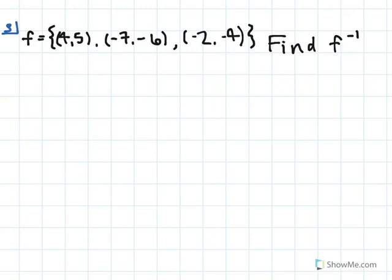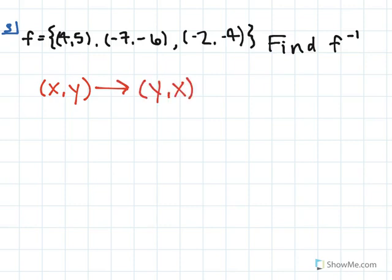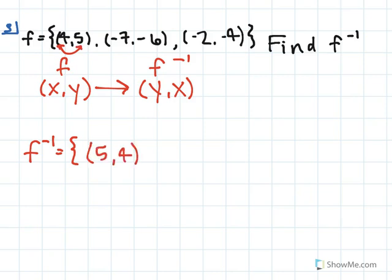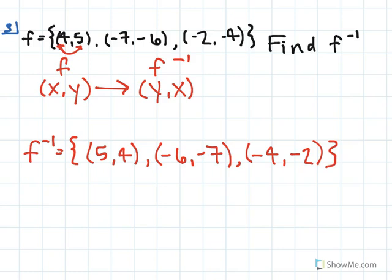In this question we're given a set of ordered pairs and we're asked to find the inverse. When working with a set of ordered pairs and you need to find the inverse, you take your point (x, y) and interchange the x and y coordinates — they become (y, x) — and that gives you f inverse. So f inverse would be: starting with (4, 5) we swap to get (5, 4), then (negative 6, negative 7) becomes (negative 7, negative 6), and (negative 4, negative 2) becomes (negative 2, negative 4). And that's our answer for f inverse.